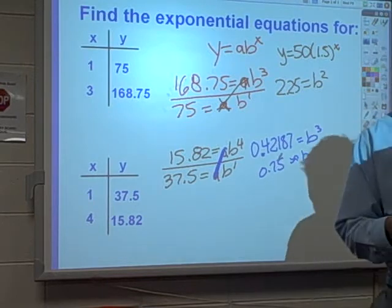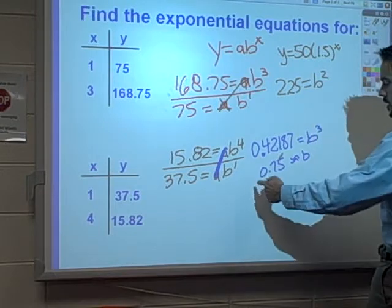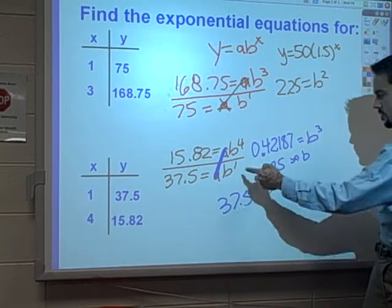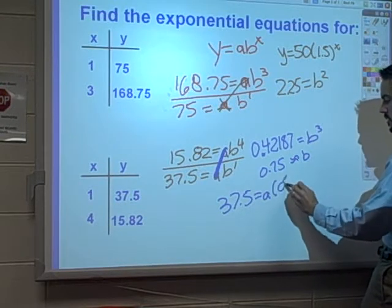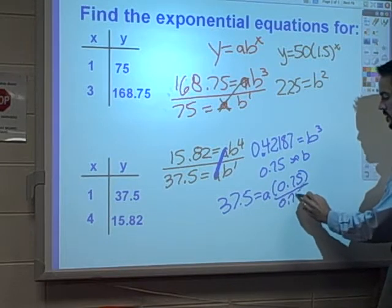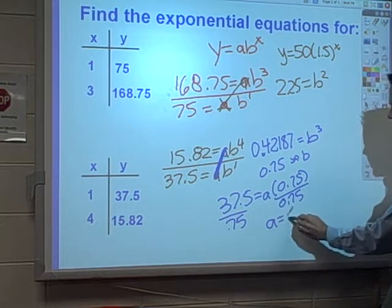So that's going to be the b value. That's going to be the multiplier. It gives us the term to term. So again, I want to plug this back into one of my equations. I like that 37.5 equaling ab to the first, because that one's a nice easy number to start with. Divide off that 0.75, and you're going to get an a value that equals 50.